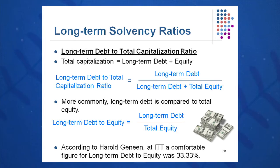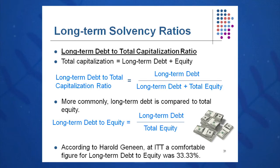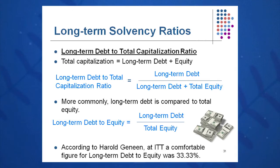Some secondary long-term solvency ratios include long-term debt to total capitalization, though in practice it's rarely used heavily. More popular is long-term debt to equity, which financial analysts in investment banks and industry favor strongly — probably number one in this category. Harold Geneen at ITT said in his book Managing that if he kept his long-term debt-to-equity ratio at 33 and a third percent, he could access any capital on Wall Street at any time — whether floating stock or selling bonds — so that's one key benchmark for that ratio.